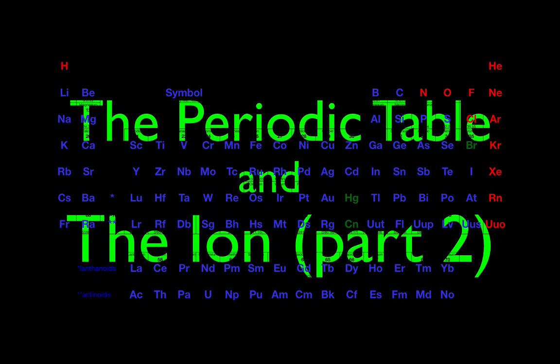Today's video is the periodic table and the ion, part two. In part one, we went over the definition of the ion, talked about the two kinds of ions and how you can determine their charges and where they are on the periodic table. In part two, we're going to go over some simple problems using ions and answer some simple questions about ions and our periodic table.